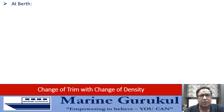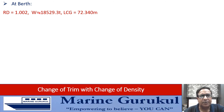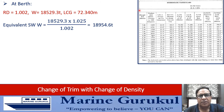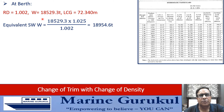Now the vessel is at berth in water of RD 1.002. Her displacement remains the same — 18,529.3 tons — as no weights have been loaded, discharged, or shifted, so LCG also remains unchanged. We need the hydrostatic particulars of the ship displacing 18,529.3 tons in dock water of RD 1.002. The hydrostatic particulars in the stability booklet are for sea water, so we calculate the equivalent sea water displacement.